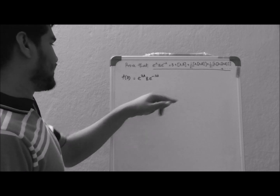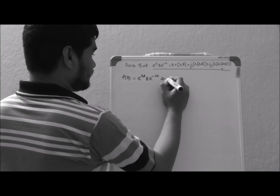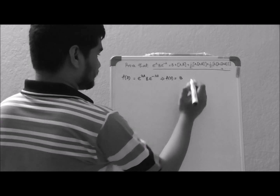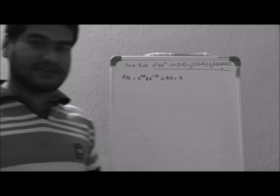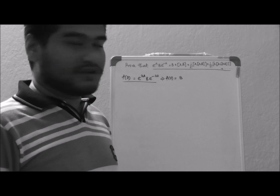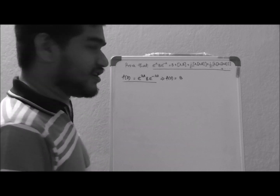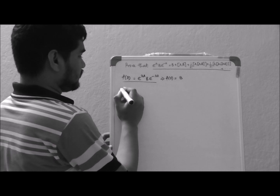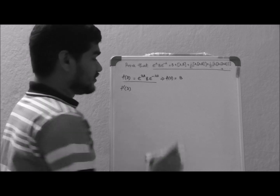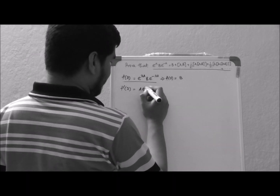So we have written a function like this, which means f(0) is equal to B. You can easily understand that f(0) is B. Now let's differentiate f(lambda) with respect to lambda. So f'(lambda) is equal to A e to the power lambda A, B e to the power minus lambda A,